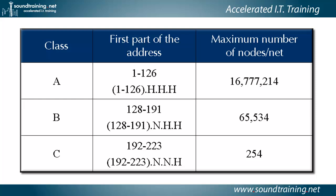Class A addresses were assigned to networks with a large number of nodes — over 16.5 million nodes per network. Numbers 1 through 126 in the first octet identify it as a class A. The last three octets were used for the host portion of the address, and the first octet for the network portion.